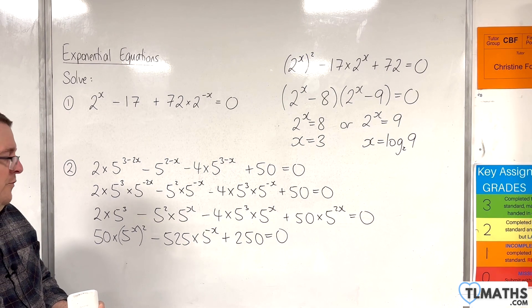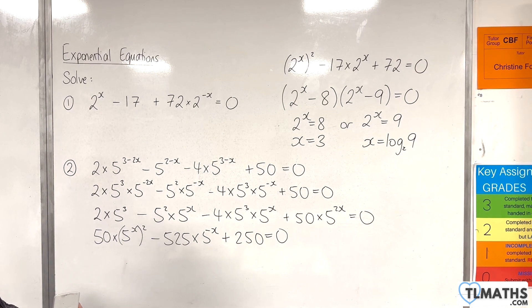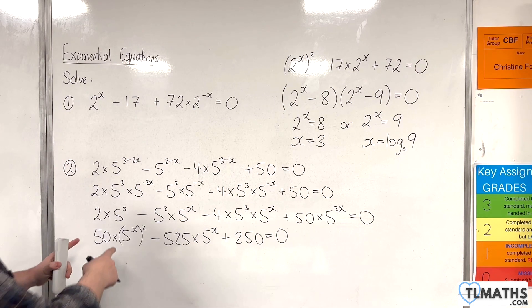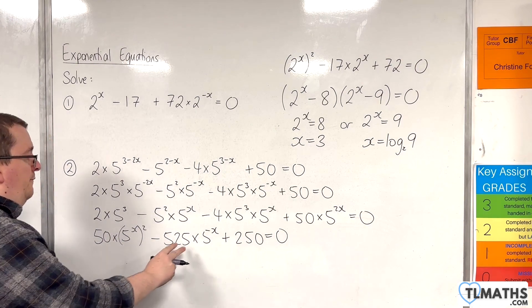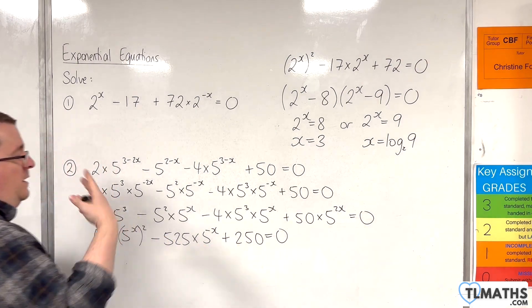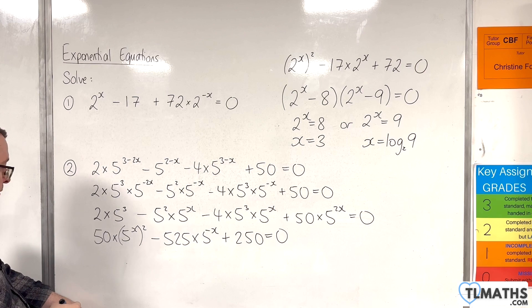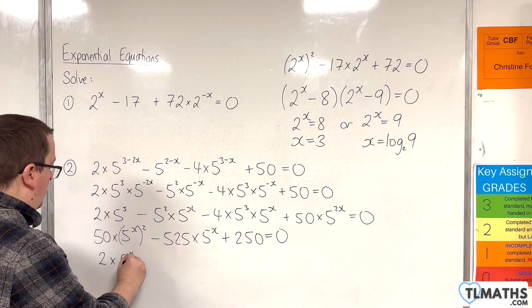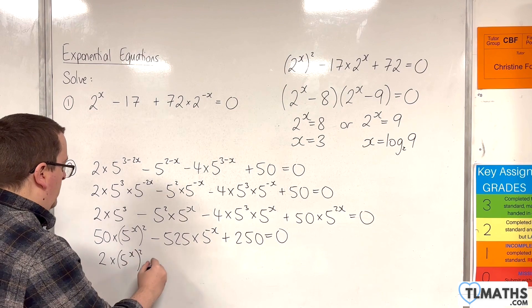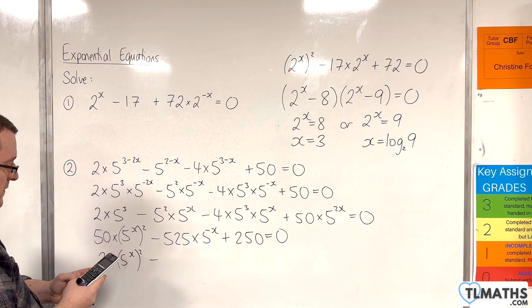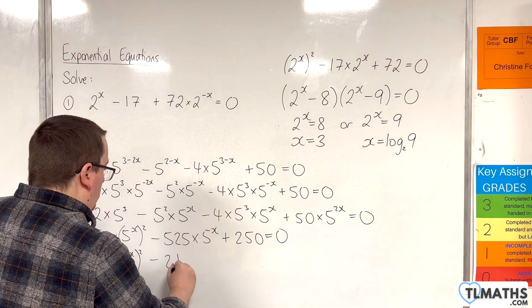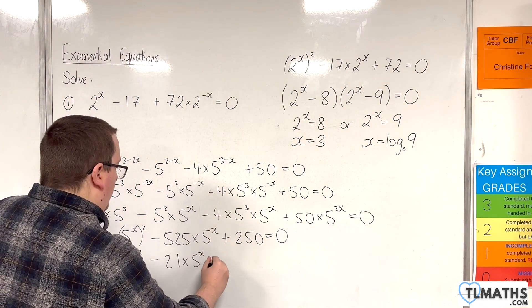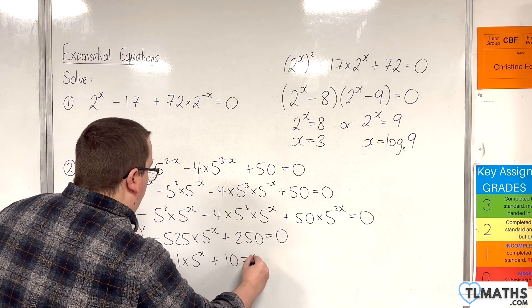Now, before factorising, I could simplify this down. Now, all of these terms, so 50, 525, 250, can all be divided through by 25. So, we would have 2 lots of 5^x squared. Take away 525 divided by 25 is 21. Lots of 5^x. And then plus 10 equals 0.